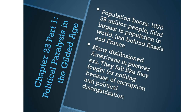The population boomed at this time. In 1870, there were 39 million people, and this was the third largest population in the world, just behind Russia and France.